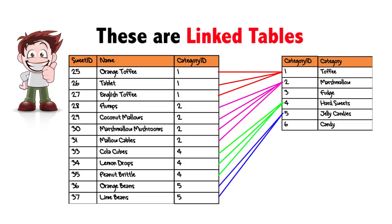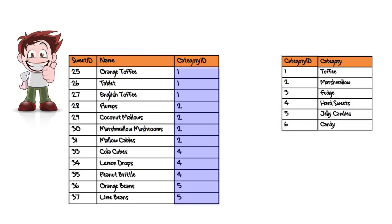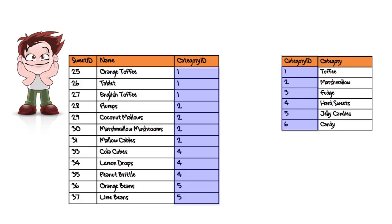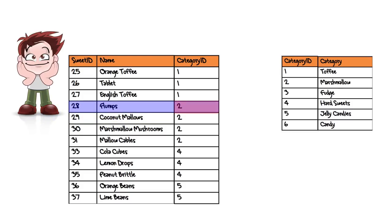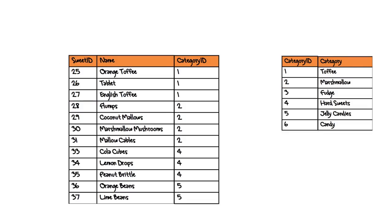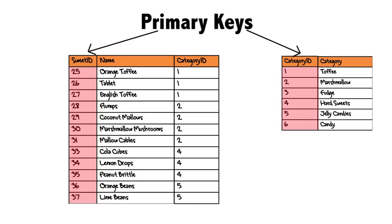We can find which records are linked together by using the value of the shared key column. If Bob wants to know which category flumps belong to, he can find the record for flumps, read the value of the Category ID, and then search the category table for the same value. This tells him the category he was looking for is marshmallow. The key columns with unique values — Sweet ID in the sweet table and Category ID in the category table — are called primary keys.